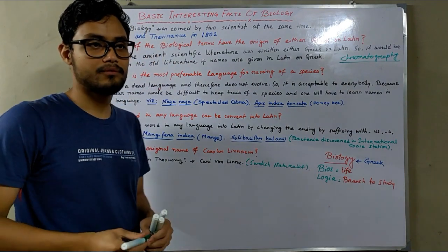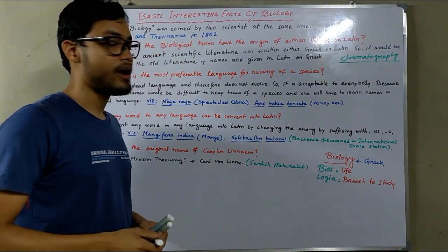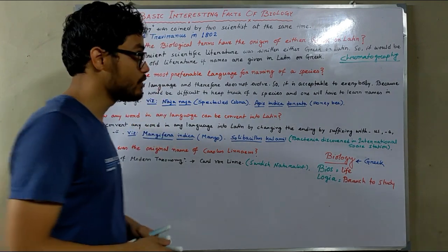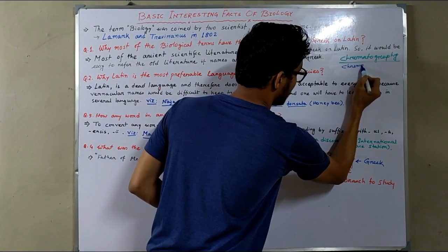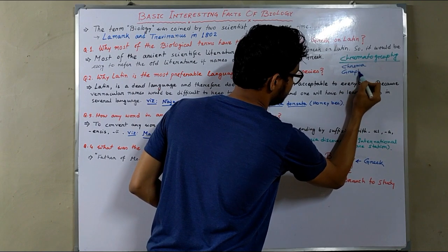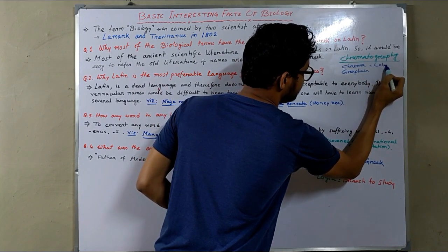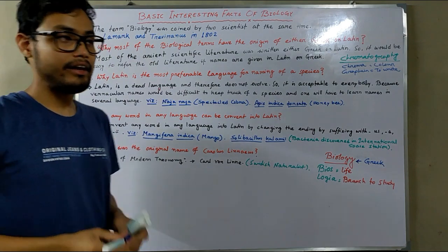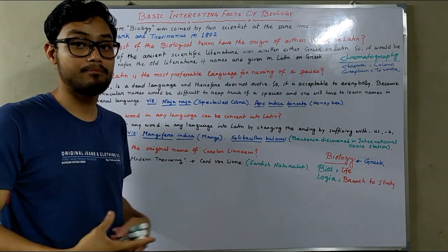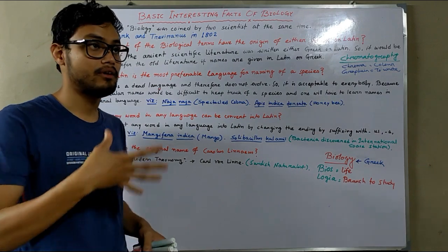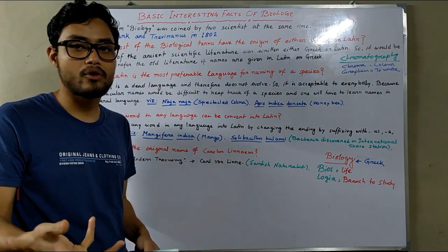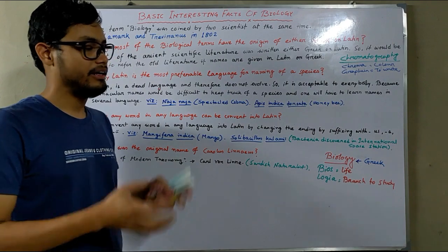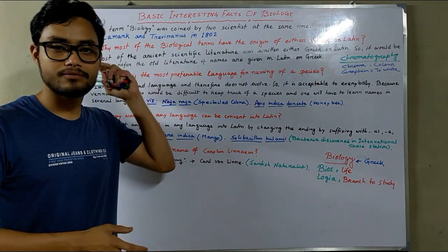Let me give you an example: chromatography. It is a very common and popular technique used to identify amino acids and different kinds of phytochemicals. It originated from Greek words — chroma, meaning color, and graphene, meaning to write. It is a technique that depends on color development of particular amino acids and phytochemicals like flavonoids and alkaloids. So in our modern discoveries, it is easy to refer back to those scientific origins from ancient Greek or Latin literatures.